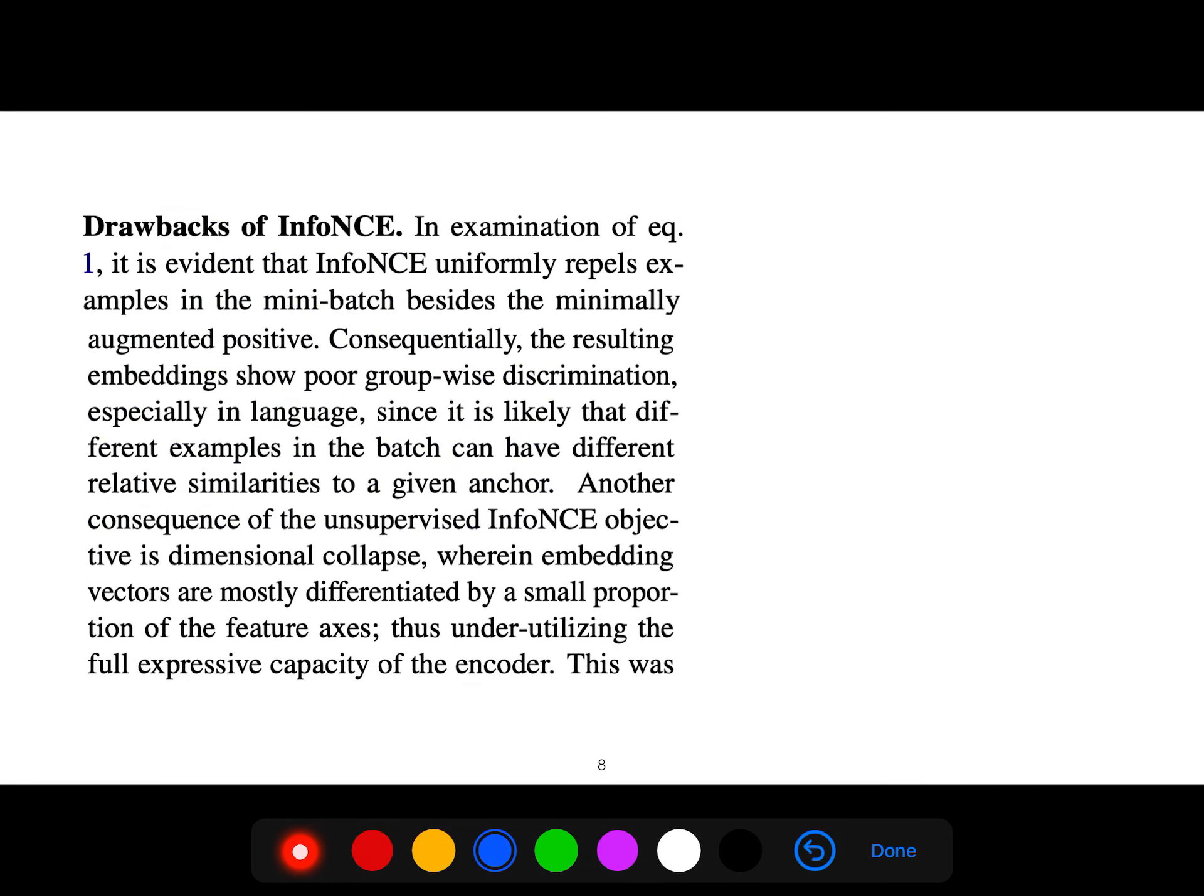But there are some drawbacks of InfoNCE. It is evident that InfoNCE uniformly repels examples in the mini-batch besides minimally augmented positives. Consequently, the resulting embeddings show poor group-wise discrimination, especially in language, since it is likely that different examples in the batch can have different relative similarities to a given anchor. Another consequence of the unsupervised InfoNCE objective is dimensional collapse.